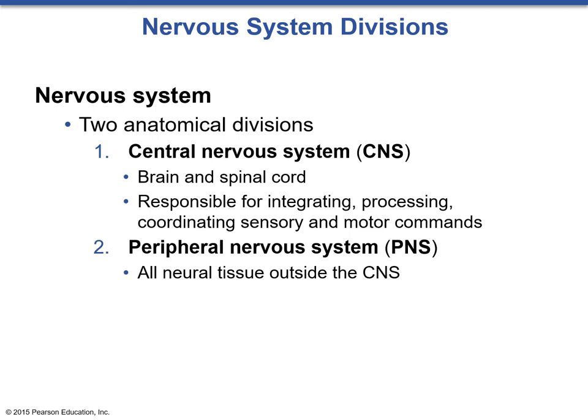The nervous system is divided into two anatomical divisions. The first is the central nervous system, which is the integration and processing center that processes all sensory information — everything that you feel, see, smell, and all internal information from the body. The central nervous system will then issue output commands that we call motor commands.